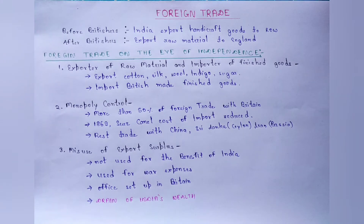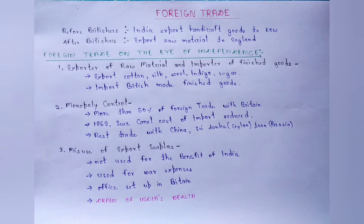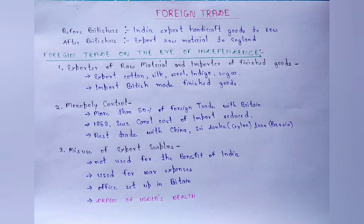In foreign trade, we have to study about the structure and composition of foreign trade on the eve of independence. Before the arrival of the British, India exported raw material to the rest of the world. But after the arrival of the British, all the raw material and 50% of foreign trade was with the British and the rest of India's foreign trade was with its neighboring countries. So in this video, we are going to know about the structure of foreign trade during independence.